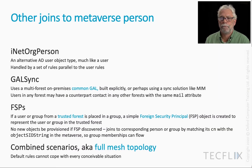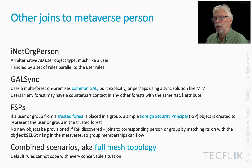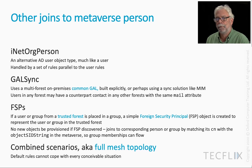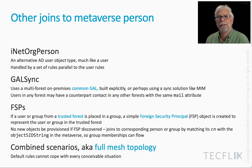Foreign Security Principles, or FSPs: if a user or group from a trusted forest is placed in a group in the forest you're in, a foreign security principle object is automatically created to represent that user or group from the trusted forest. When we import a foreign security principle, we never want a new object provisioned — we just want it to join to the corresponding person or group. We can do that using its CN, because the CN of a foreign security principle is the SID of the object concerned. Since we have an ObjectSID string in the metaverse, we can join CN to the ObjectSID string, allowing any groups with the foreign security principle to correctly point to the user concerned. We'll show that diagrammatically in a moment.